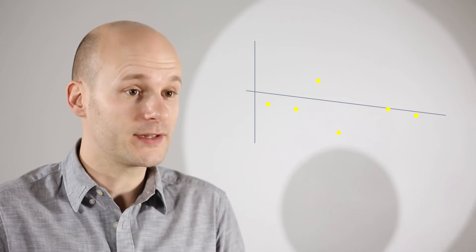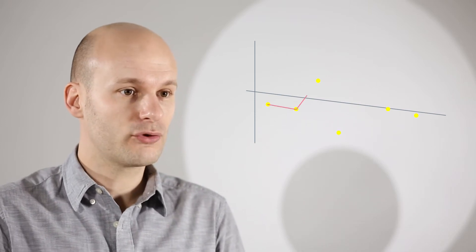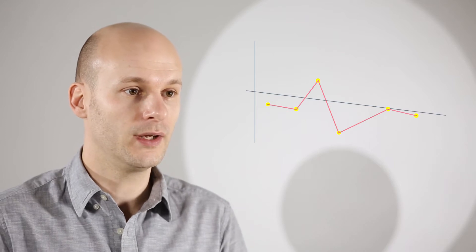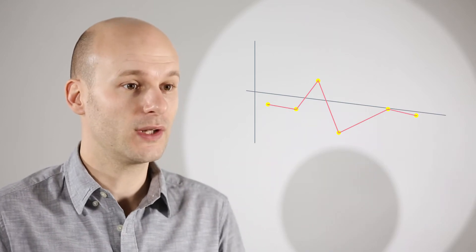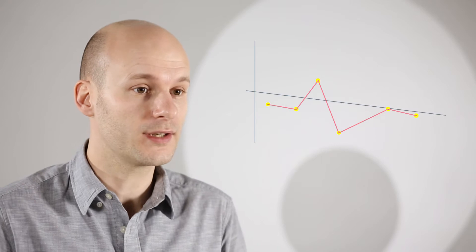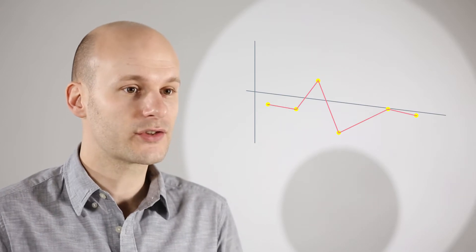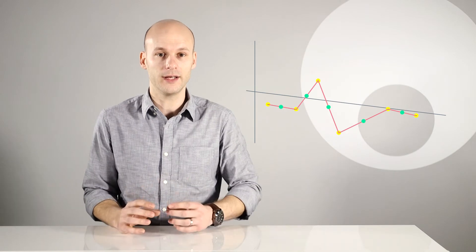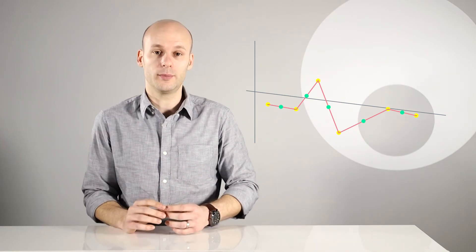When most manufacturers upsample audio they simply draw a straight line between these given sample points in a digital signal to guess what the original analogue audio signal would have looked like. This is known as straight line approximation. When they have their straight line approximation manufacturers then take their new or upsampled points from that straight line.